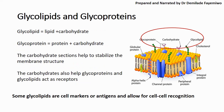We have glycolipids and glycoproteins: glycolipids are lipids with a carbohydrate, while glycoproteins are proteins with a carbohydrate — the 'glyco' prefix refers to the carbohydrate. The carbohydrate sections help to stabilize the membrane structure. They also help glycoproteins and glycolipids act as receptors, which is very important for cell signaling, where cells send out signals in the form of small molecules that must bind to a receptor on the next cell's surface in order to get a response.